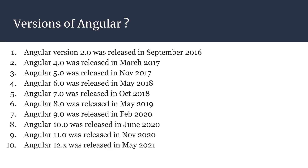Angular 6 was released in May 2018, Angular 7 in October 2018, Angular 8 in May 2019, Angular 9 in February 2020, Angular 10 in June 2020, Angular 11 in November 2020, and Angular 12 was most recently released in May 2021.